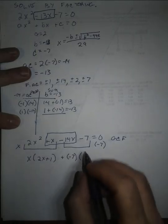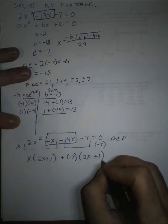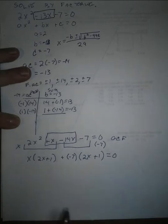And when I factor out a negative 7, I get 2x. And when I factor out a negative 7, I get plus 1, and that's equal to 0.